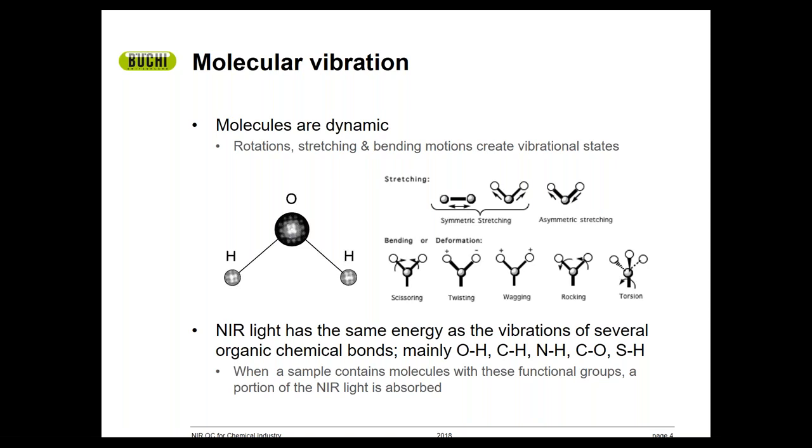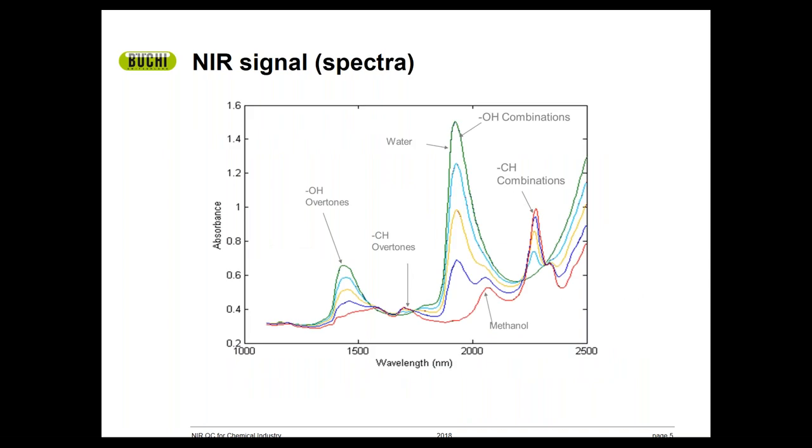Next, let's see what that signal actually looks like. Here is a series of simple water-methanol mixture spectra. The plot axes are absorbance over wavelength. These spectra illustrate the change in NIR signal that accompanies a change in the sample composition, with each color of the figure representing a different water-methanol composition.